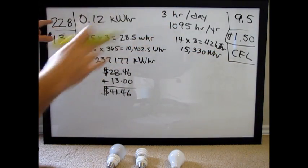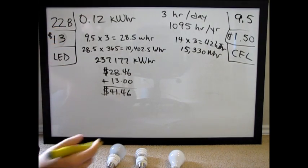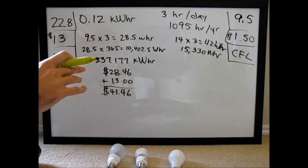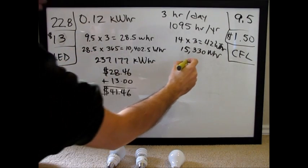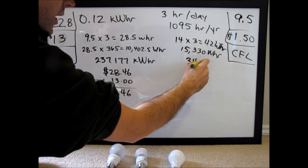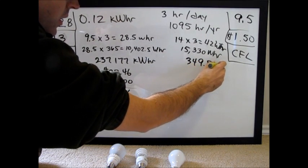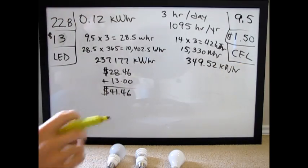For sake of comparison, we need to get to 22.8 years, so multiply that by 22.8 years, and then we're going to convert to kilowatt hours, and that is 349.52 kilowatt hours, because that's what the electric company bills in.